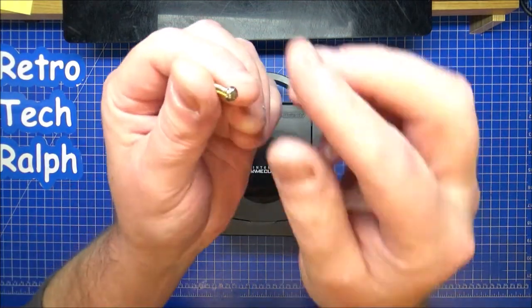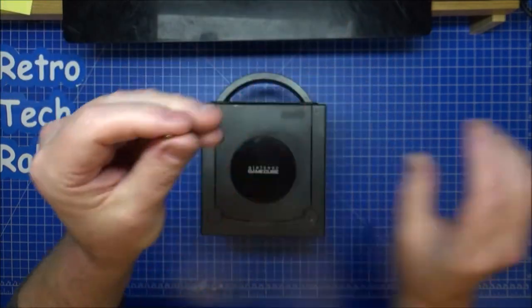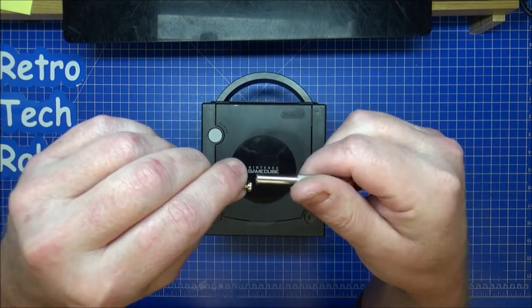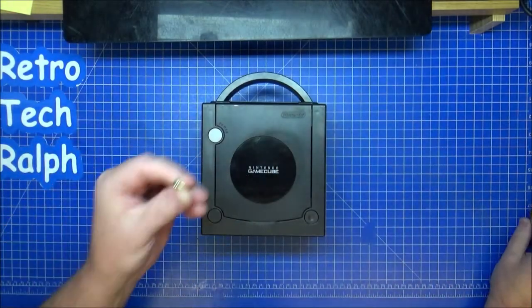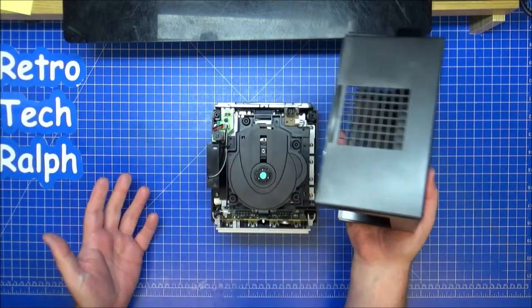After you've done, these screws are, there you go, that type of head on them. They're a nice interesting head. You probably will be able to round these off quite quickly as well but be careful with them. Once the four screws are out, lift off the top. Simple as that.